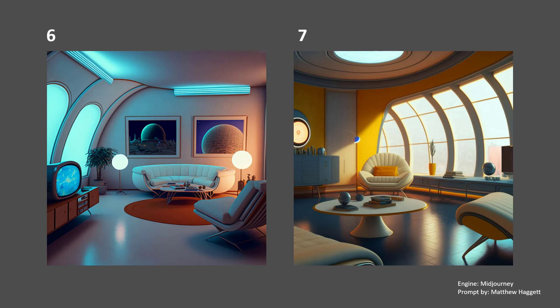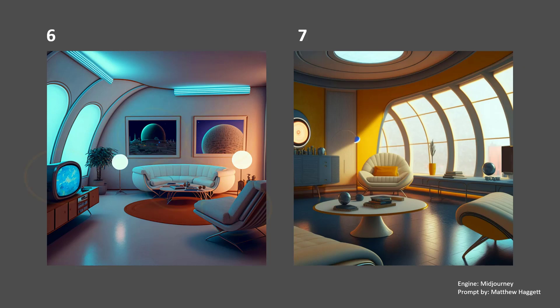Let's now analyze this pair of images that are part of the same collection. We observe that the image on the right works better. In the image on the left we have too many points of interest, all of the same size, and this causes the hierarchy between the shapes to be weak. In the image on the right we have a clear point of interest while everything else surrounds it. The hierarchy is much stronger and the composition works better.